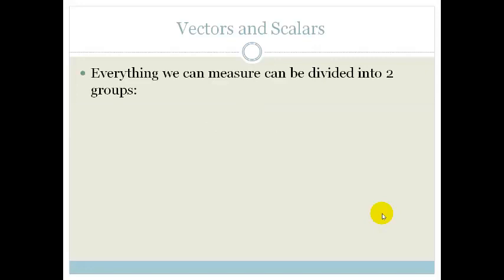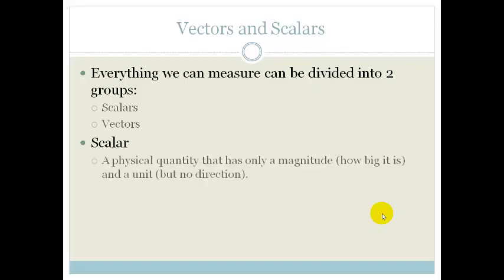Everything we measure can be divided into two groups: vectors and scalars. A scalar is a physical quantity that has magnitude only. In other words, it is how big it is and it has a unit, as in kilograms, but there is no direction.